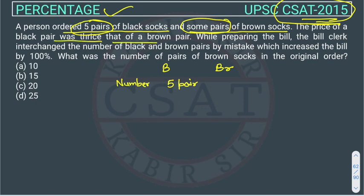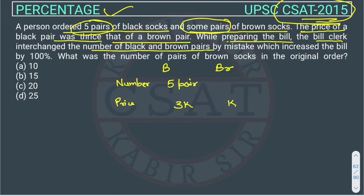The price of a black pair was thrice that of a brown pair. So suppose the price of brown is k, then black will be 3k. While preparing the bill, the clerk interchanged the number of black and brown pairs by mistake. Suppose the number of brown socks ordered was n.